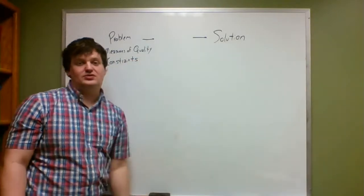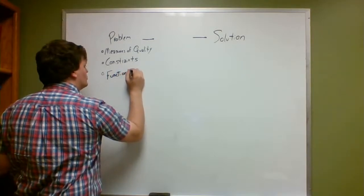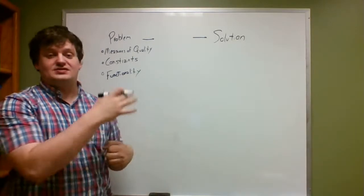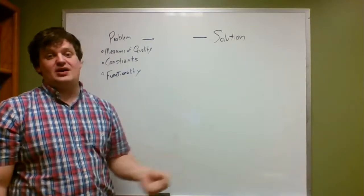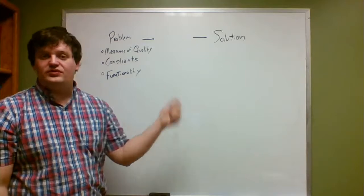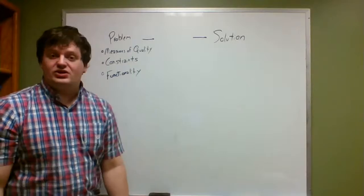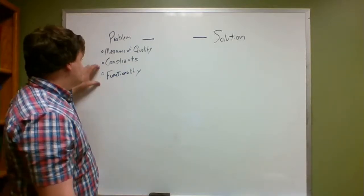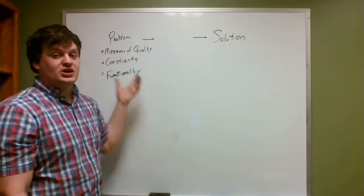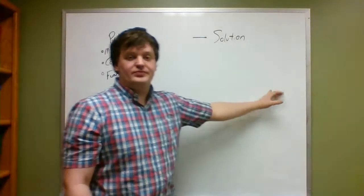A constraint restricts your creative freedom and refines what the solution has to consist of in order to be valid — based on your materials on hand, your competencies, your capabilities. These are yes/no conditions that strongly define what the solution has to look like. Then over here you have functionality. What do you need to have done? If you're designing a hammer, you need something with a hard surface that can pound nails and provide mechanical advantage using a swing motion like a lever. Functionality, constraints, and measures of quality all combine to define what the problem is.